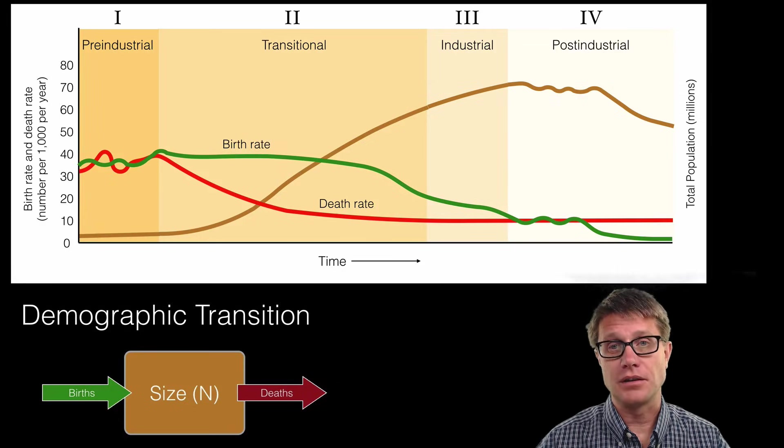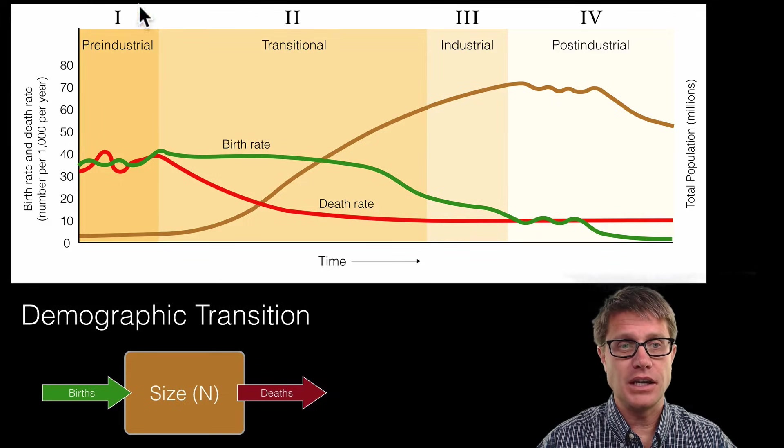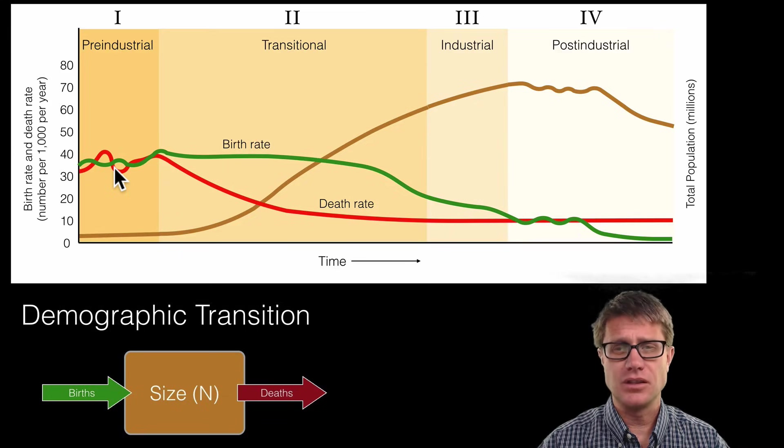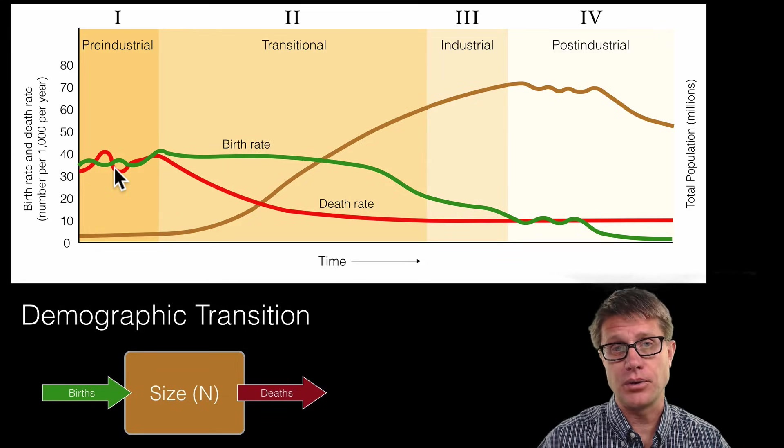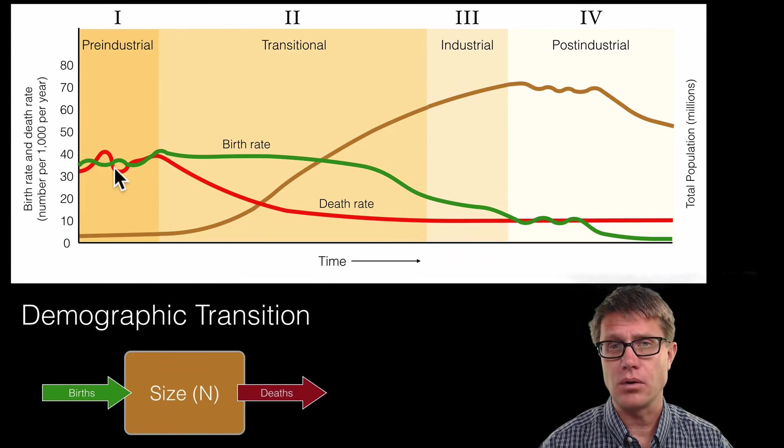And so this is just a model. It does not always work exactly this way. But it is a pretty good prediction on what is going to happen as countries start to industrialize. Now is anybody in type 1? Not really. So there are some countries due to war and like the AIDS epidemic in Africa that are pushing them back into 1. But in generally they are either in phase 2, 3 or 4.